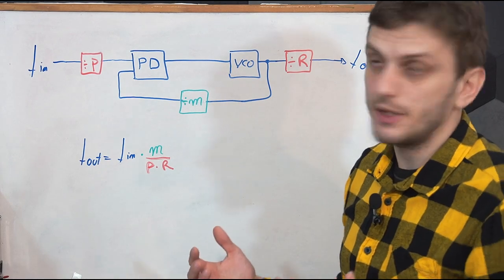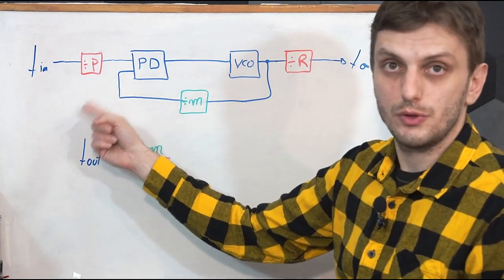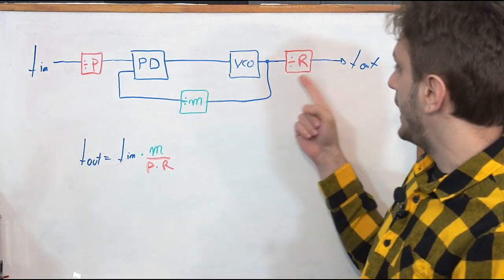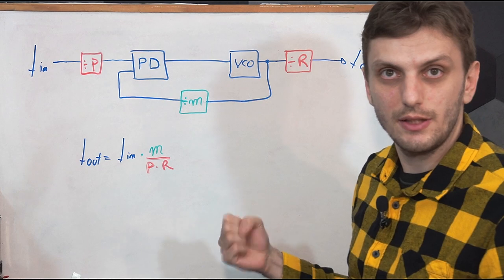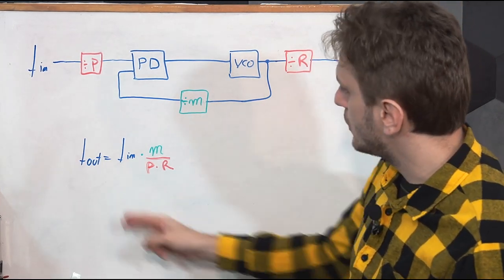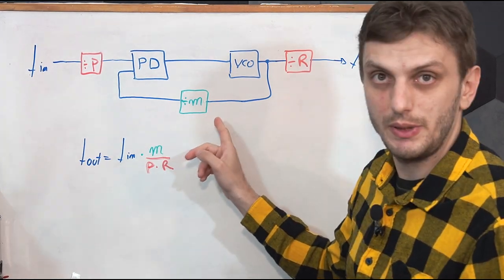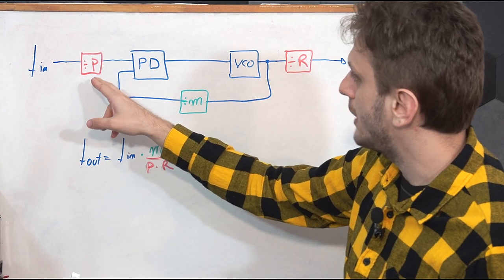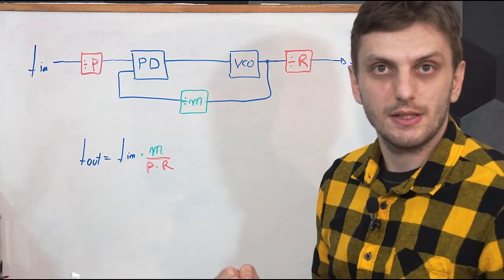Basically, what these are are counter circuits added before our phase lock loop — the pre-scaler — or a counter circuit added at the end of the phase lock loop, called a post-scaler. The output frequency will then be our input frequency multiplied by the ratio by which the PLL multiplies, divided by the number by which our scalers are dividing the signal.